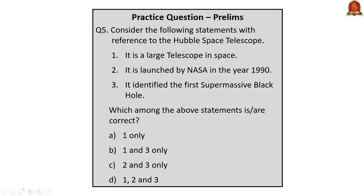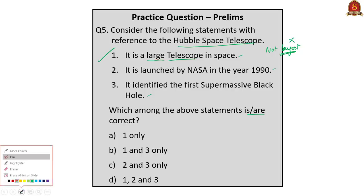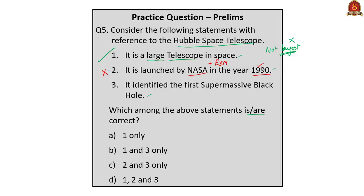Question 5 considers statements about the Hubble Space Telescope: Statement 1 — it is a large telescope in space; Statement 2 — it was launched by NASA in 1990; Statement 3 — it identified the first supermassive black hole. Statement 1 is correct — it is a large telescope, but not the largest. Statement 2 is partially wrong — it was a joint NASA and ESA project, not NASA alone; it was launched in 1990. Statement 3 is correct. The correct answer is option B: 1 and 3 only.